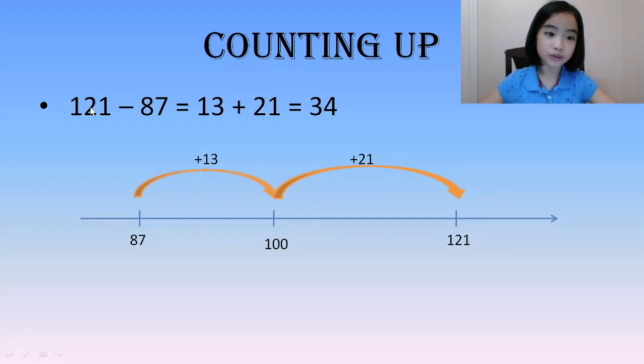So, 121 minus 87 equals 13 plus 21, which is equivalent to 34.